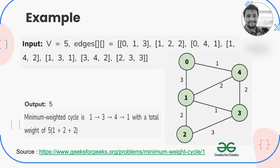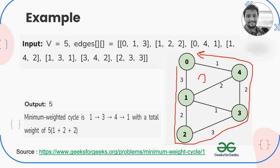Let's see one more example. In this example there are multiple cycles — one larger outer cycle and some smaller cycles inside the graph.